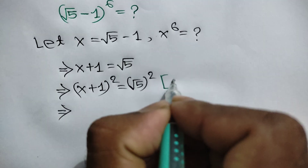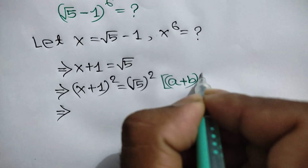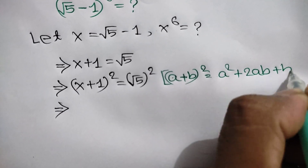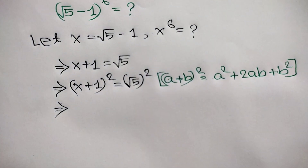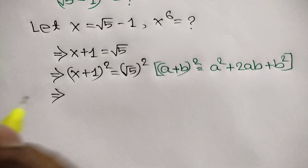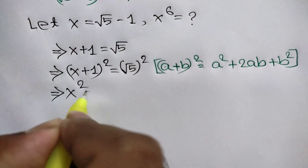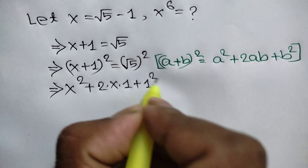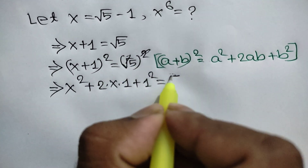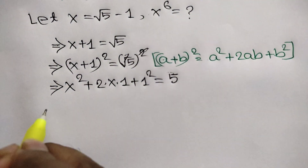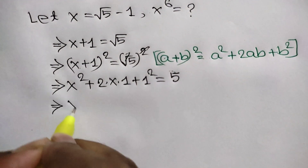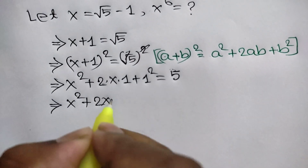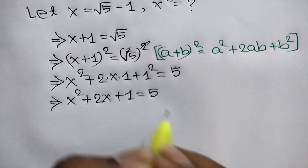We know the algebraic formula: a plus b whole square is equal to a squared plus 2ab plus b squared. Applying this rule, we can write x squared plus 2x plus 1 squared is equal to 5. So here we get x squared plus 2x plus 1 is equal to 5.